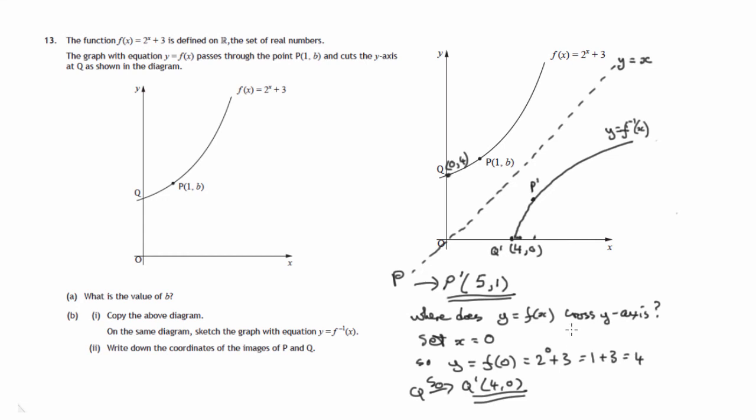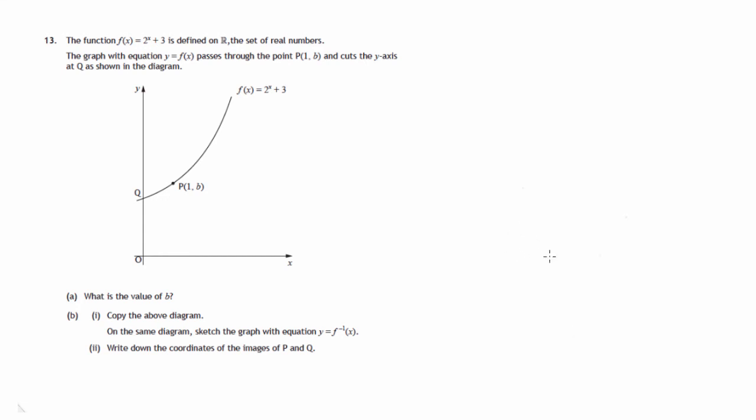So let's move on now to part c. In part c, we're told that the point (3, 11) lies on the graph with equation y equals f of x. And we have to find the coordinates of the image of R in the graph with equation y equals 4 minus f of x plus 1. So we should be aware of the effect that these various alterations have to the graph of y equals f of x.